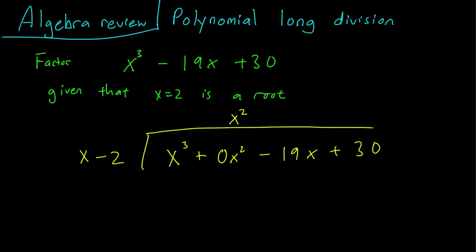So x squared is here. x squared times x is x cubed, giving us x cubed minus 2x squared. We subtract this, the x cubed terms cancel out, and we are left with just 2x squared.